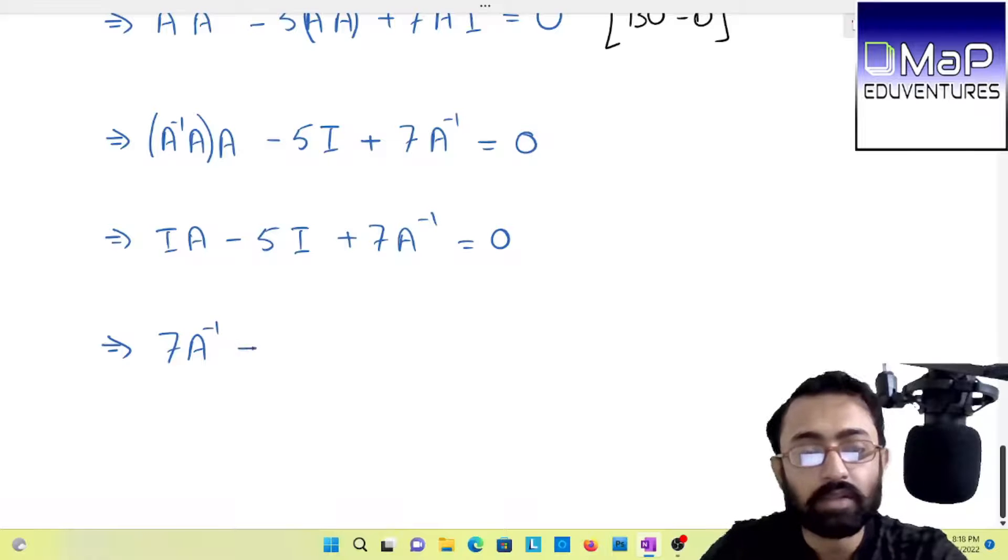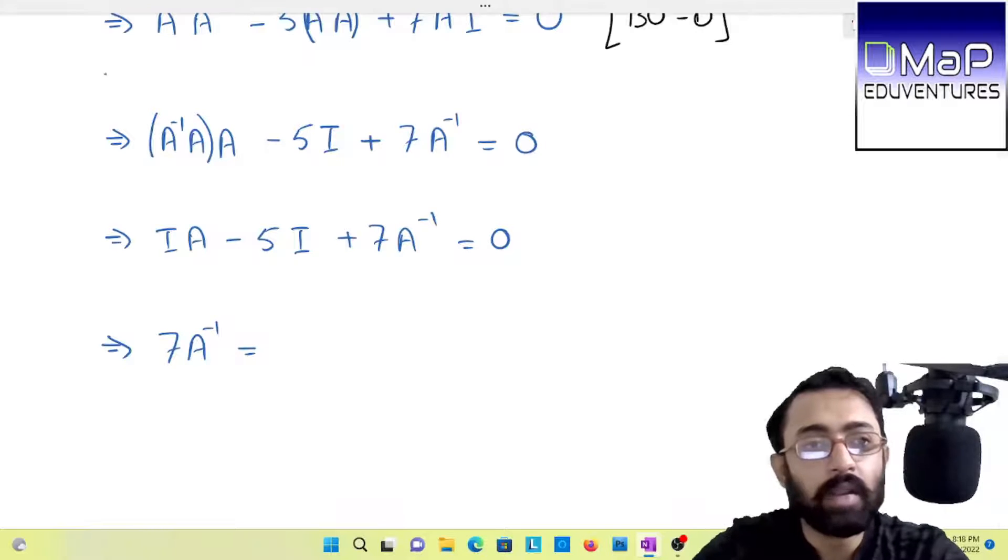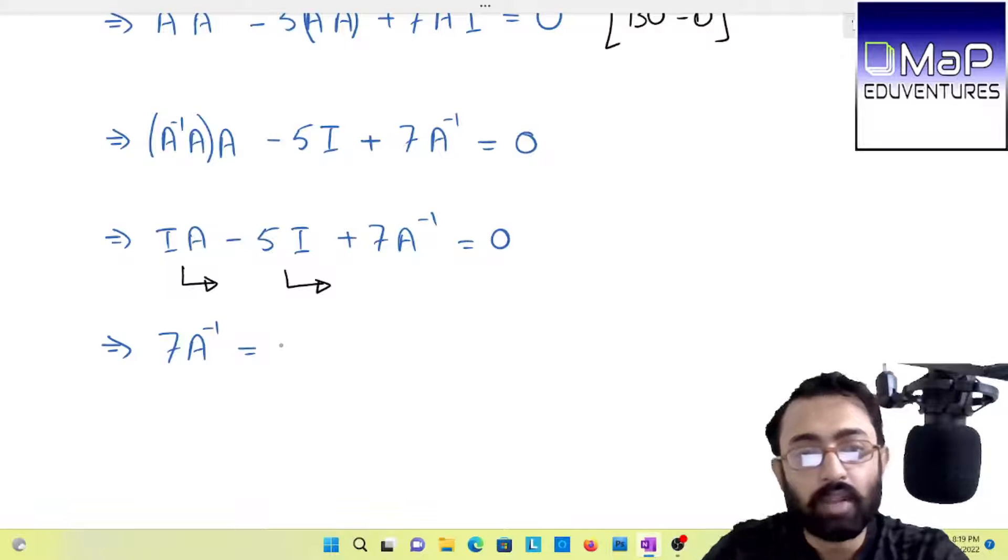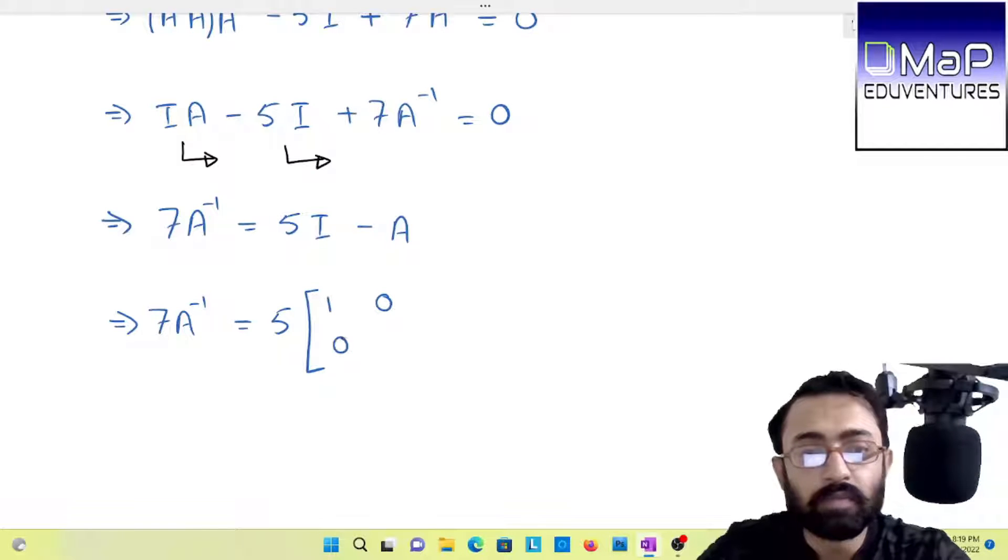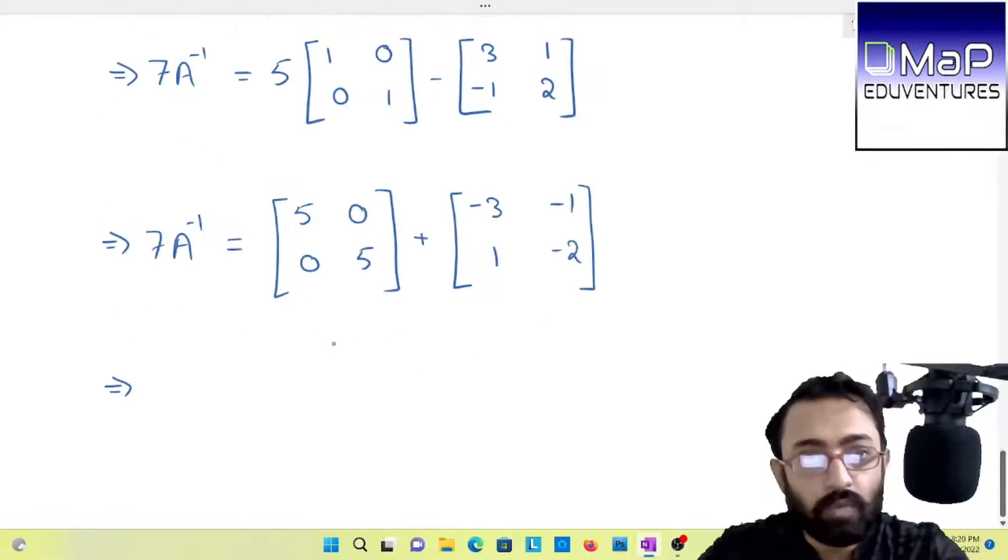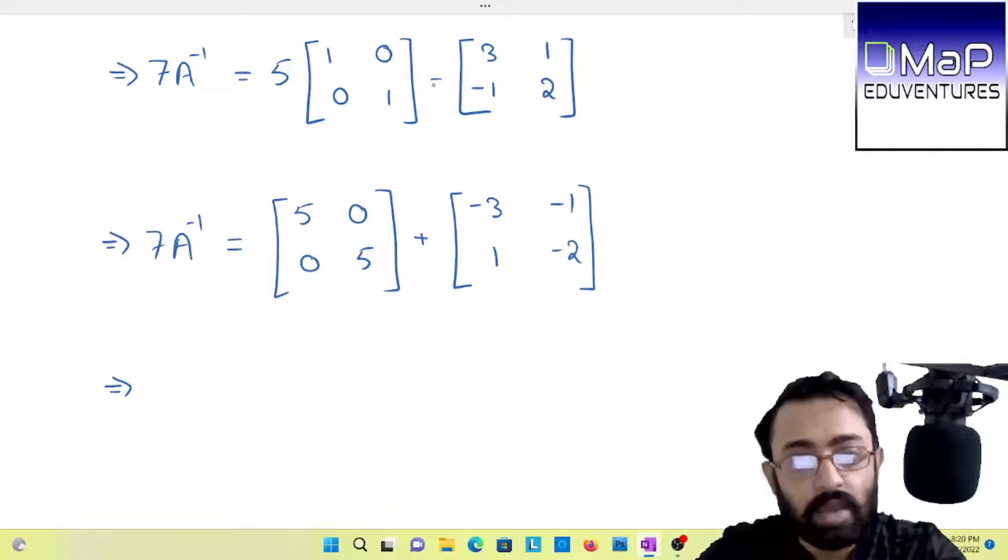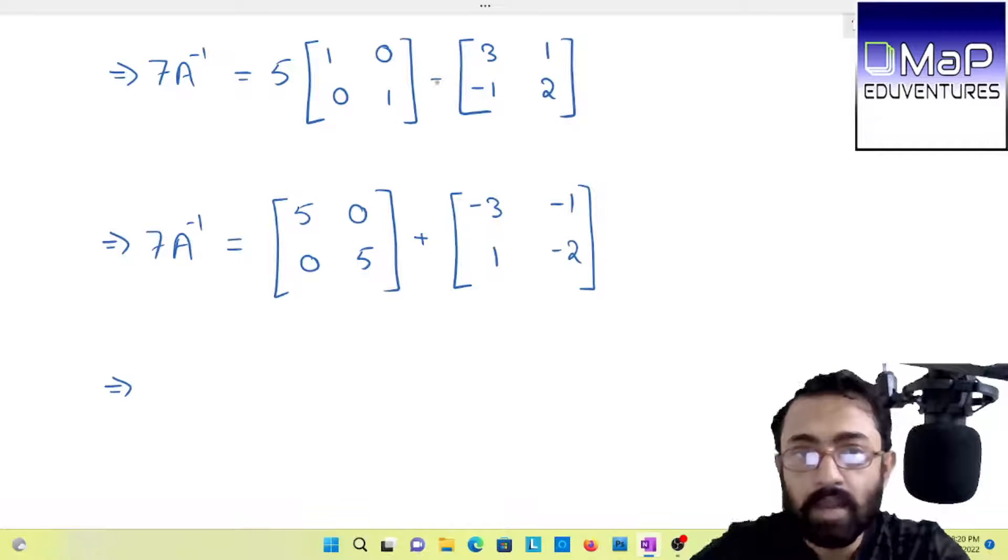We will get 7A inverse equals to 5I minus A. So 7A inverse equals to 5 times our identity matrix minus A, the matrix 3, 1, minus 1, 2. What we have done here? In the first matrix I have multiplied 5 and in the second matrix I have multiplied the minus and taken plus sign ahead.